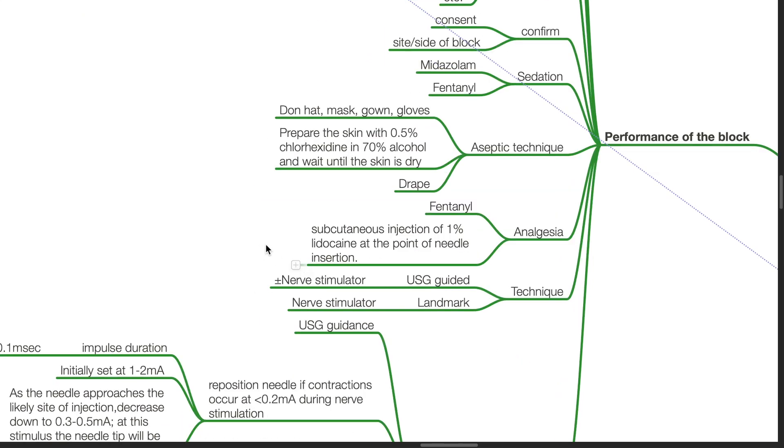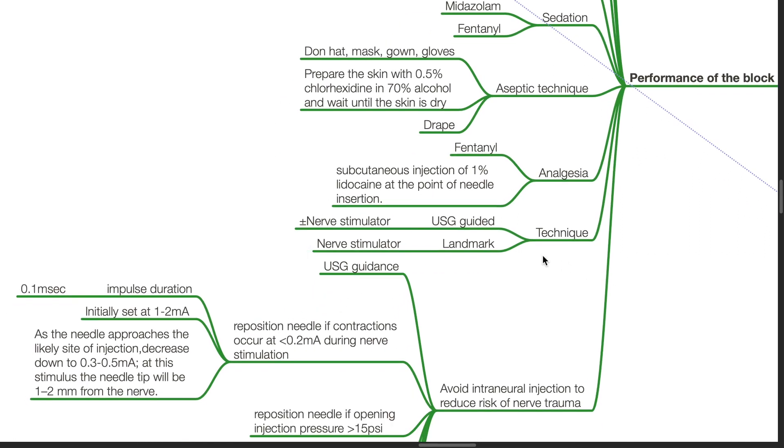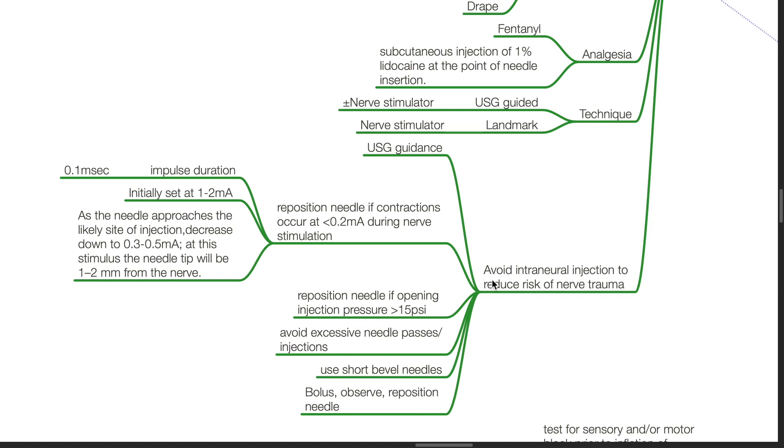Analgesia includes fentanyl and subcutaneous injection of 1% lidocaine at the point of needle insertion. Techniques include ultrasound-guided technique with or without nerve stimulator and landmark technique with nerve stimulator. Avoid intraneural injection to reduce the risk of nerve trauma.